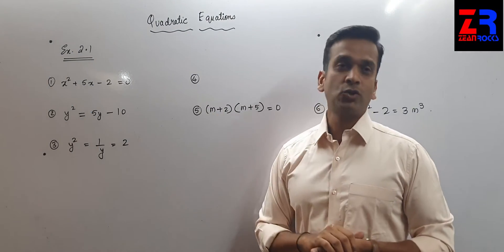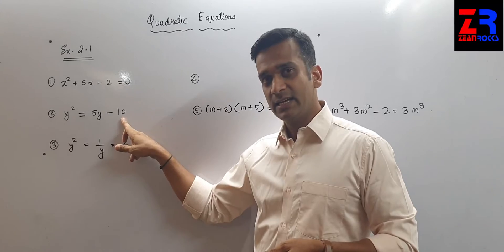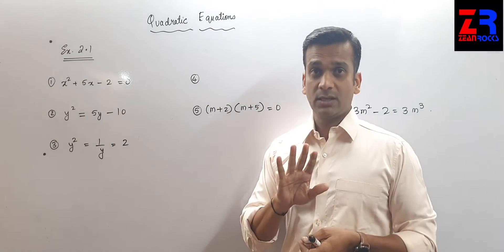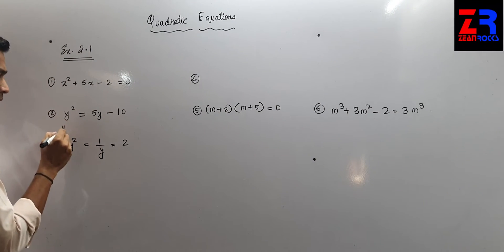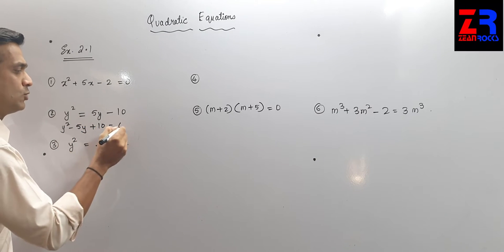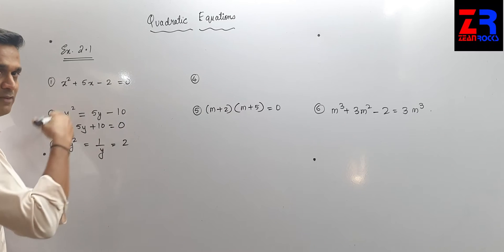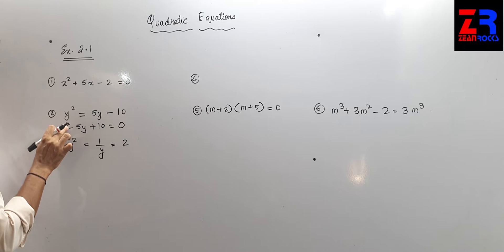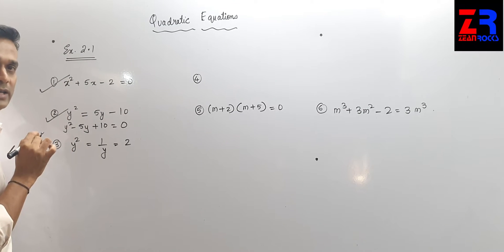Looking at question number 2, I can directly decide that this is a quadratic equation, but you have to solve it. You have to take all the terms on the left-hand side. y² minus πy plus 10 equals 2. This is called transposing — taking all the terms on the left-hand side, keeping 0 on the right-hand side. Here the power is 2, so this is also a quadratic equation.